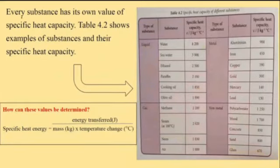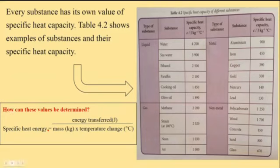Every substance has its own value of specific heat capacity. Table 4.2 shows examples of substances and their specific heat capacity. These values can be determined using: specific heat capacity equals energy transfer in Joules, divided by mass in kilograms, multiplied by temperature change in degree Celsius.